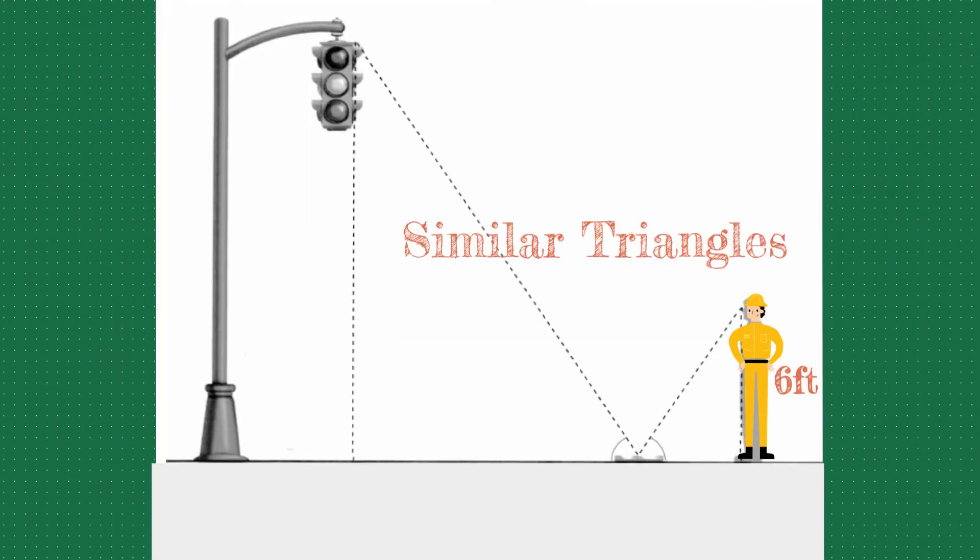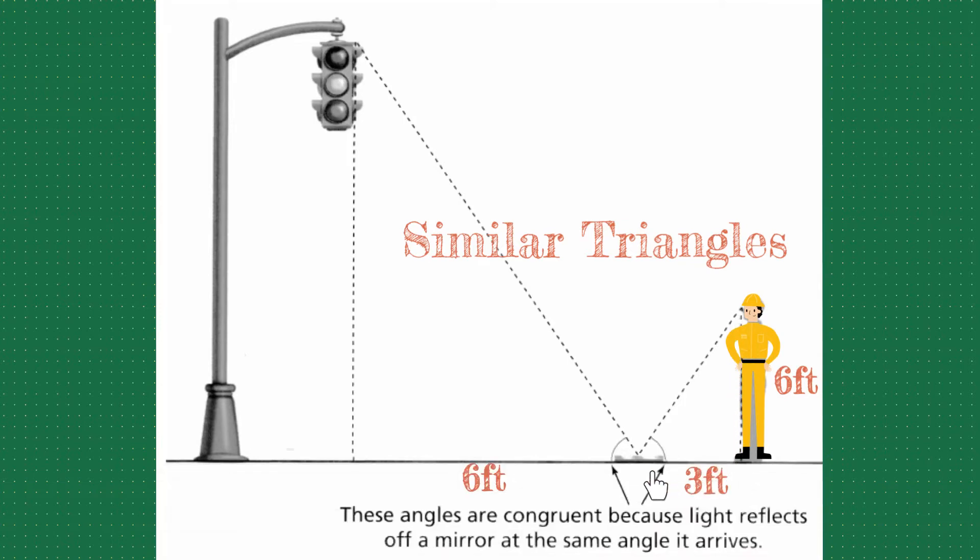This next method doesn't rely on shadows, but it's still a way to find the height indirectly of an object. The first thing you need to do is find a mirror. Then you're gonna place that mirror a chosen distance away from the object and make sure that's face up. Then you're going to look into the mirror and back up until you can see the top of the object in the mirror. The distances that you can take are the distance from your eye to the ground, from you to the middle of the mirror, and then from the middle of the mirror to the base of the object.